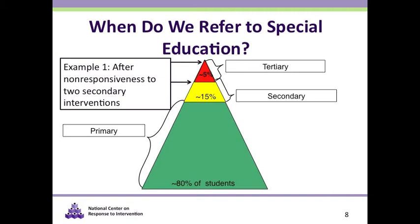In this first example, based on models from Doug and Lynn Fuchs, referral to special education occurs after non-responsiveness to two evidence-based secondary interventions. In this model, responsiveness to tertiary instruction is a component of the comprehensive evaluation, and tertiary instruction is considered to be special education. If effective, 80% of students should be benefiting from the specialized services they receive — that is, 80% of the approximately 15% identified in the chart.